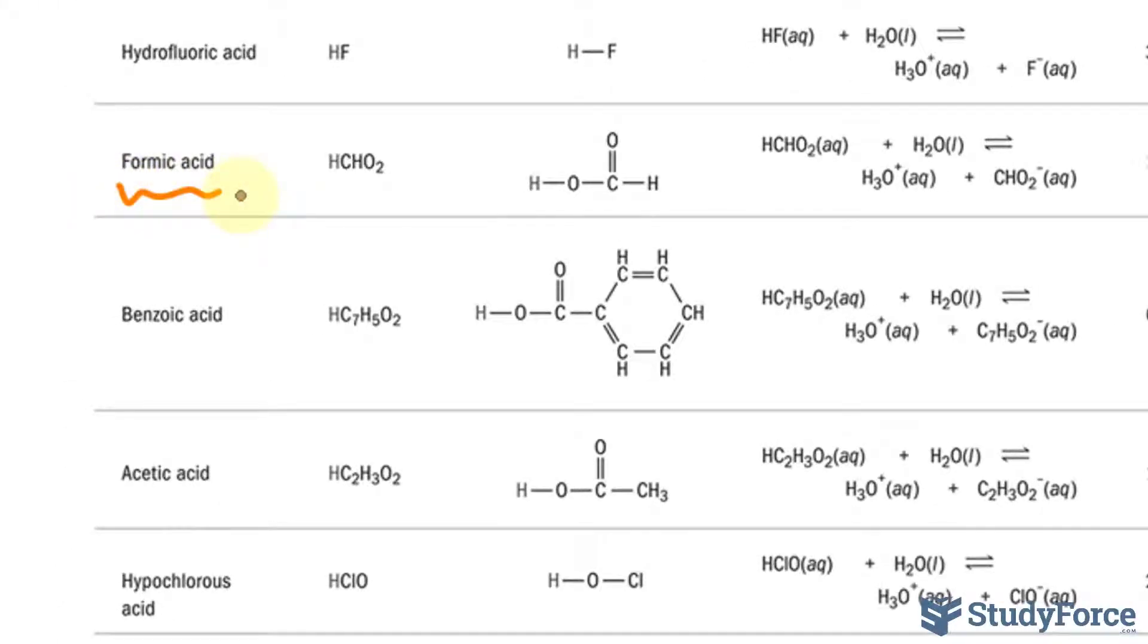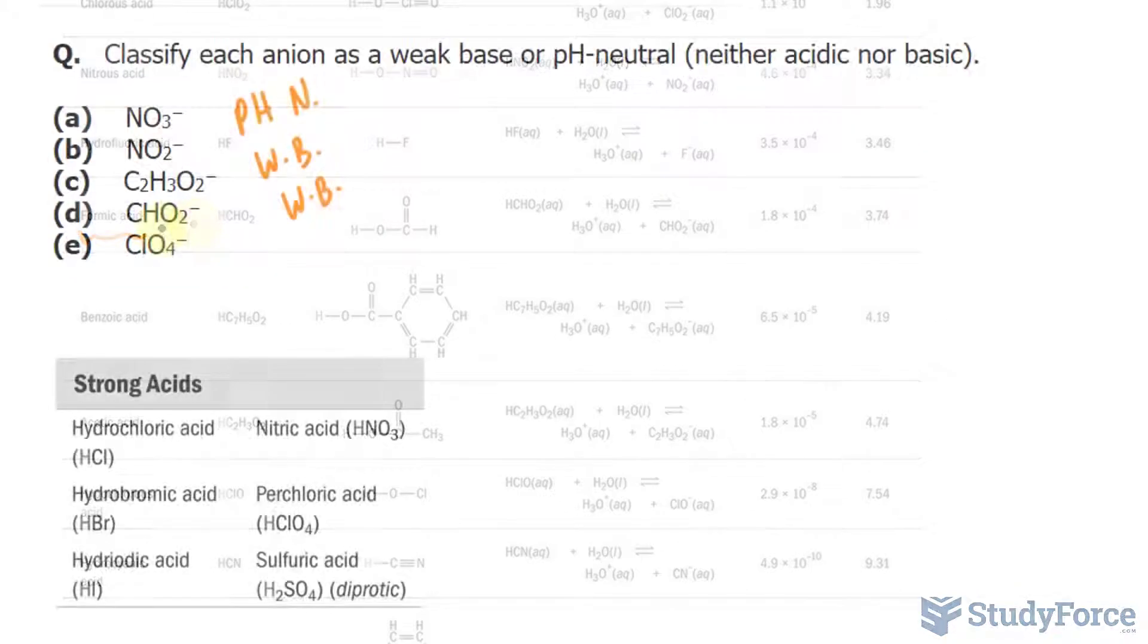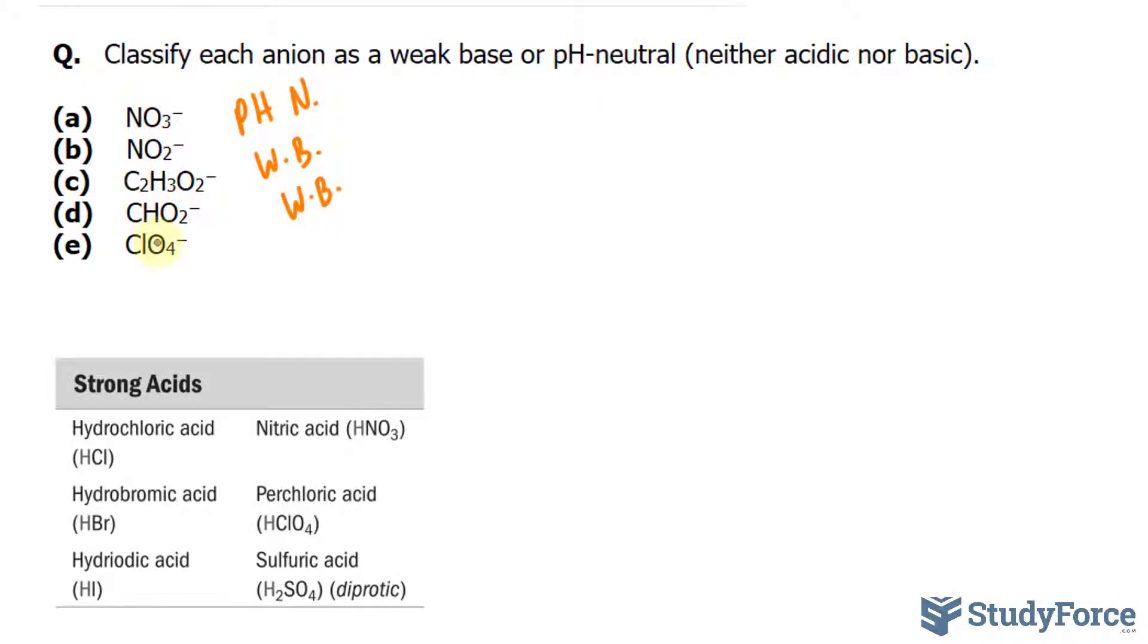It's formic acid. Formic acid is a weak acid, and its chemical formula is HCHO2. It has a similar chemical formula to CHO2-, and since it's a weak acid, this one should be a weak base as well.